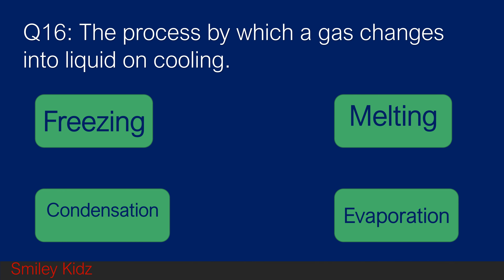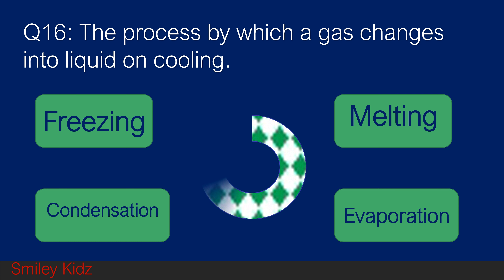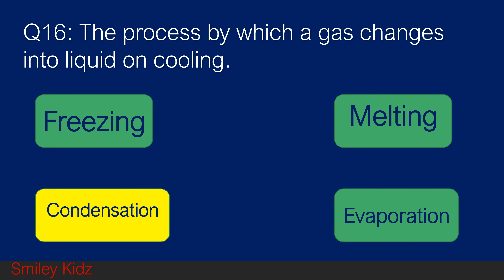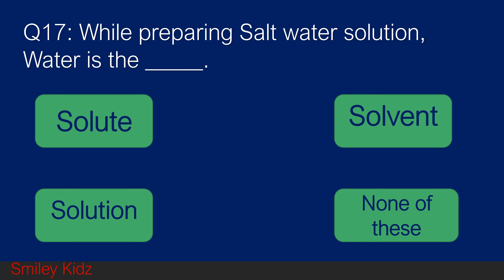Question number 16. The process by which a gas changes into a liquid on cooling is called: option A freezing, option B melting, option C condensation, and option D evaporation. Your time starts now. And your time is up. The right answer is condensation. The process by which a gas changes into liquid on cooling is called condensation.